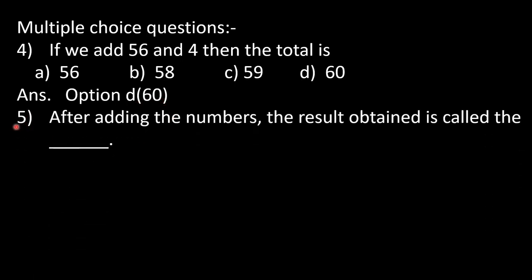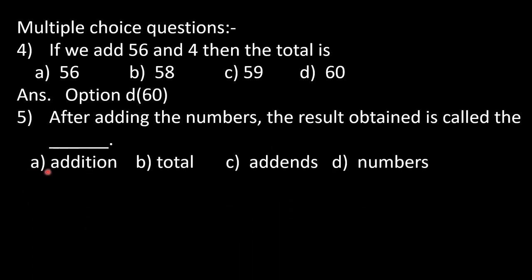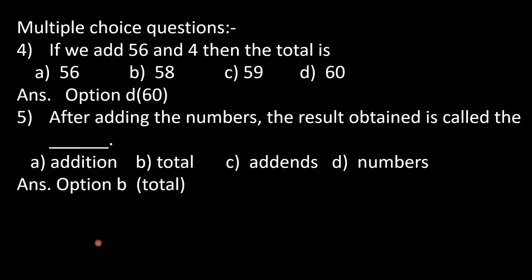In question number 5: after adding the numbers, the result obtained is called the dash. Options: A) addition, B) total, C) add-ins, D) numbers. When we add numbers and get the result, that is called the total. So our option B is correct — total.